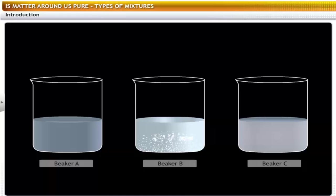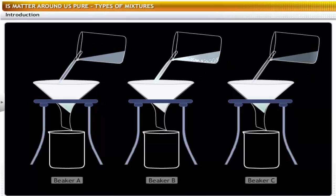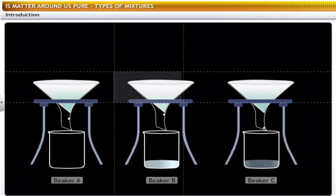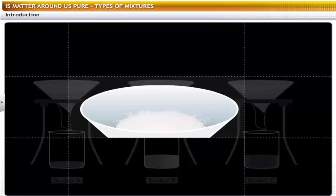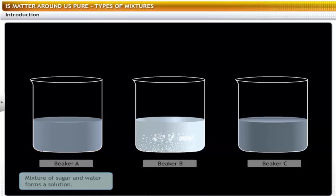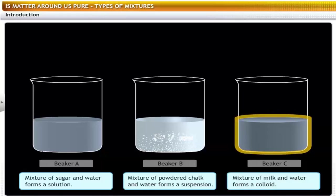Leave the mixtures undisturbed for some time, then filter each of the mixtures. You will find a residue on the filter paper for beaker B. The mixtures in the beakers are of three distinct types: the mixture in A is a solution, in B is a suspension, and in C is a colloid.